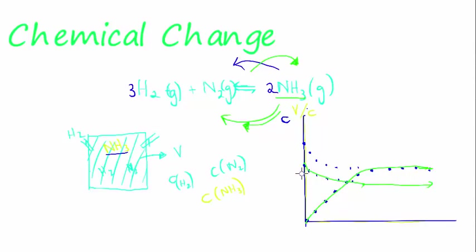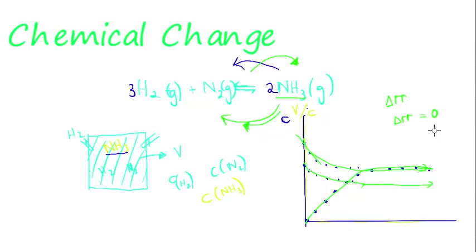The reaction rate is still represented by the gradient, but when the gradient is zero, it doesn't mean that the reaction has stopped as it did in the previous graphs. It just means that the reaction rate for the forward and the reverse is the same. What this gradient represents is the difference between the forward reaction rate minus the reverse reaction rate. When it's zero, it means the change in reaction rate is zero — it doesn't mean the reaction rate itself is zero.